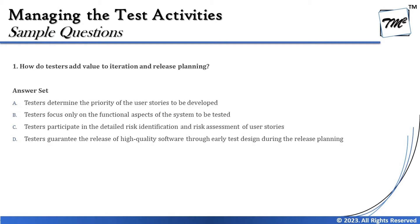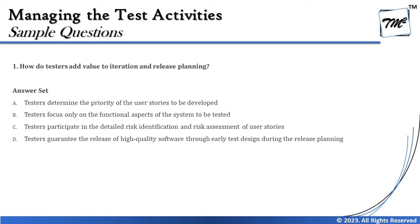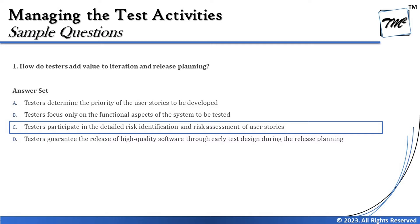Option D says testers guarantee the release of high quality software through early test design during release planning. That's a contradicting statement — implementation, early test case preparation, and design are core activities limited to iteration planning, not the release level. At the release level we define scope and major constraints rather than doing concrete activities. So the right answer is C: testers participate in detailed risk identification and risk assessment of user stories.